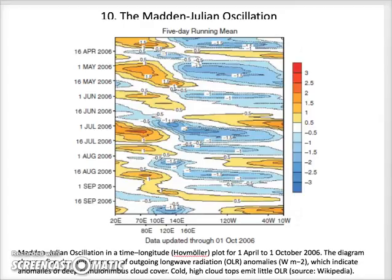The Madden-Julian Oscillation was discovered by Madden and Julian in 1971 through an analysis of zonal wind anomalies in the equatorial Pacific. It is a large-scale coupling between atmospheric circulation and deep convection in the tropics, and makes up the largest fraction of the intra-seasonal 30 to 90-day variability in the tropical atmosphere.